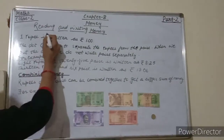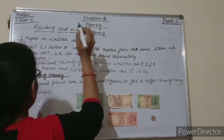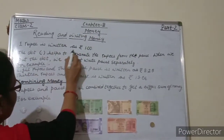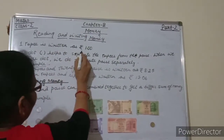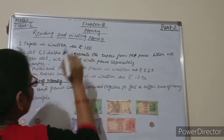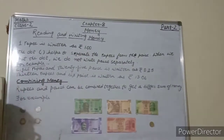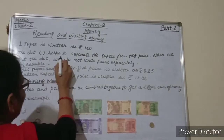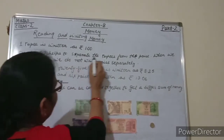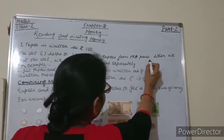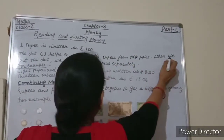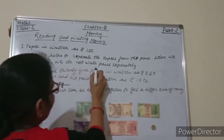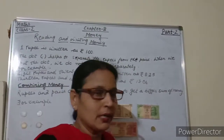Students, reading and writing money. 1 rupee is written as rupee 1.00. The dot helps to separate the rupees from the paise. When we put the dot, we do not write paise separately.